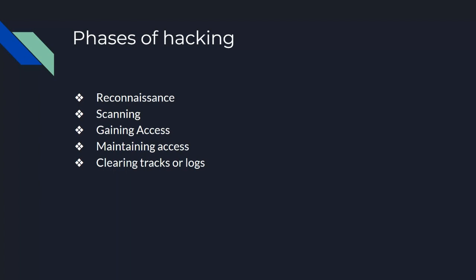If you find a vulnerability, you can use it to gain access. You exploit it automatically. If you have a system and you find a vulnerability, if you exploit it you can access it. This is the third phase — Gaining Access — it means gain access to the system.